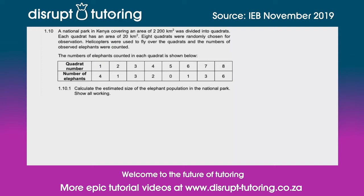So let's jump in. A national park in Kenya covering an area of 2200 km² was divided into quadrats. Each quadrat has an area of 20 km² and 8 quadrats were randomly chosen for observation. Helicopters were used to fly over the quadrat and the numbers of observed elephants were counted.